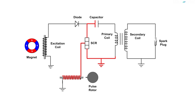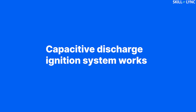Thus, a high current flows through the primary coil and changes the magnetic field around it. Because of this, a high voltage gets developed in the secondary coil, and the resulting high current is fed to the central electrode of the spark plug. Due to the high potential difference between the electrodes of the spark plug, the gap between them gets ionized, resulting in the formation of a spark. This is how the capacitive discharge ignition system works.